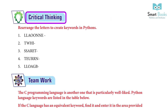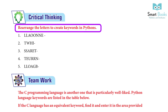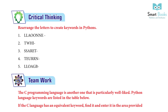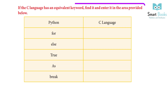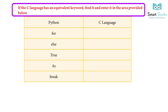Critical Thinking: Rearrange the letters to create keywords in Python. Answer: Ask students to do it by themselves. Team Work: The C programming language is another particularly well-liked language. Python language keywords are listed in the table. If the C language has an equivalent keyword, find it and enter it in the area provided. Answer: Ask students to do it by themselves.